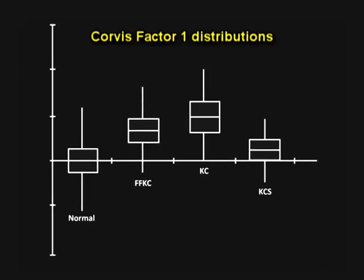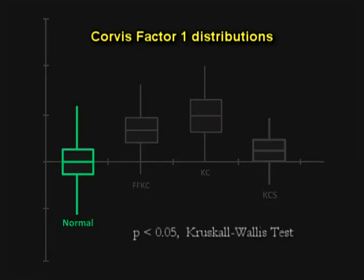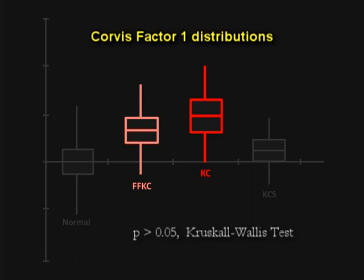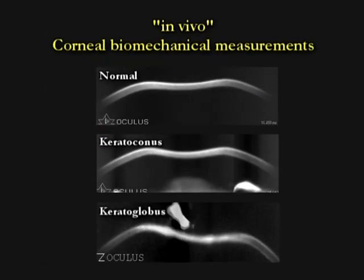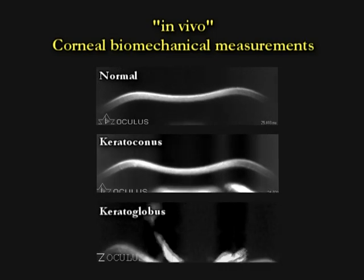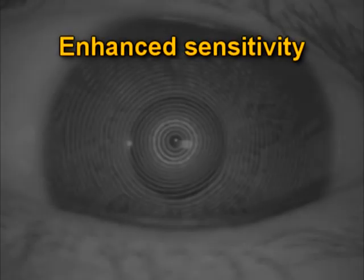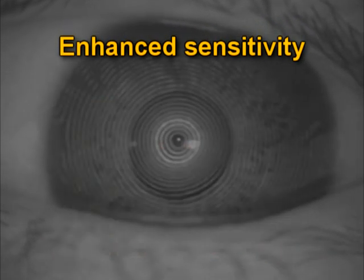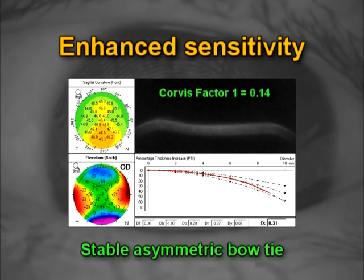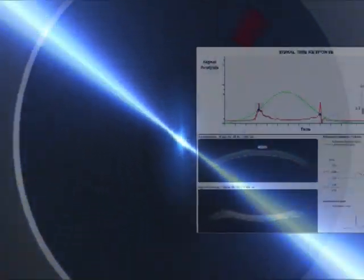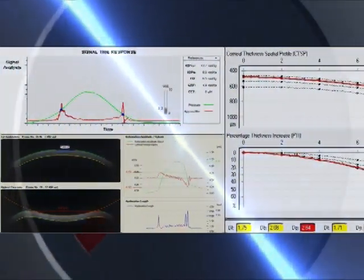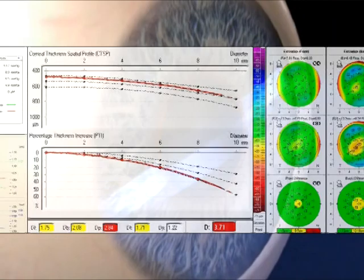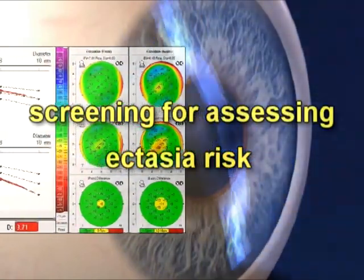Corvis Factor 1 had statistically significant distribution differences between normal and ectatic cases, but no differences were found between the KCS and normals, as well as between the forme fruste keratoconus and keratoconus cases. The visualization of the corneal response to non-contact air pressure for assessing biomechanical properties enabled enhanced sensitivity to detect ectasia on corneas with normal topography and was also specific for ruling out an ectatic pattern on cases with suspicious topography. These data, combined with corneal tomography parameters that characterize thickness distribution and elevation, provide the ultimate screening for assessing ectasia risk among refractive candidates.